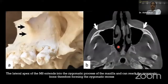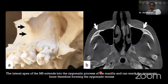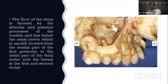The lateral apex of the maxillary sinus extends toward the zygomatic process. You can see the zygomatic arch extending downward — this is the zygomatic process of the maxillary sinus. The floor of the sinus is formed by the alveolar and palatine processes of the maxilla. It lies below the nasal cavity and is usually located from the mesial part of the first premolar to the distal part of the third molar, with the lowest point at the first and second premolars.